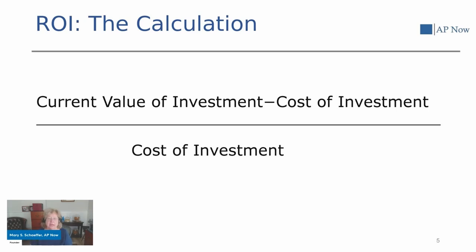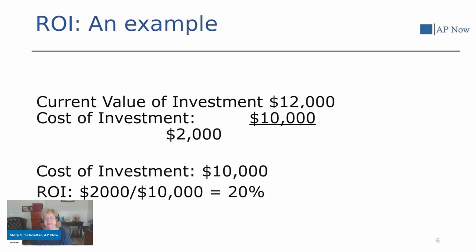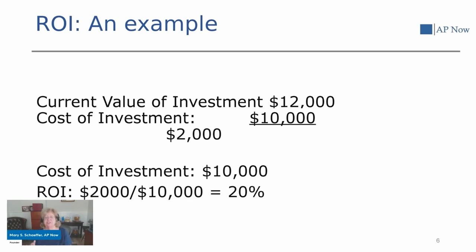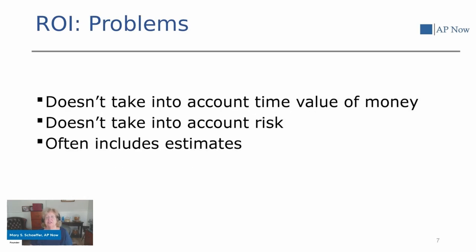We're going to compare ROI with payback, but we're going to start off by talking about ROI — return on investment. This calculation is pretty straightforward: you take the current value of the investment minus the cost of that investment and divide it by the cost of that investment. These numbers are typically reported as a percentage. You'll hear things like ROIs of 20%, and so when you're in there with your AP project showing an ROI of 8%, sometimes you've got a little bit of an uphill battle. Let's go through a simple numerical example: if the current value of an investment was $12,000 and the cost was $10,000, you take the difference — $12,000 less $10,000 equals $2,000 — divide that by the $10,000 cost of the investment and you get an ROI of 20%.